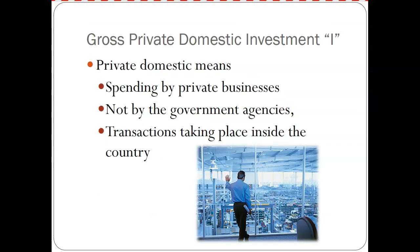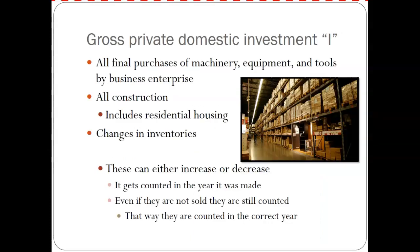Second, gross private domestic investments — I usually just say business investment. It is private, so we're not talking about the public or government sector. It's private businesses spending by businesses, not a government agency, and the transactions are taking place inside the country, so it's domestic spending. This covers all final purchases of machinery, equipment, and tools by business enterprises. Capital goods are not the same as intermediate goods — intermediate goods get incorporated into the final product, while capital goods like a forklift stay with the business and are used in the process but not incorporated into the goods.